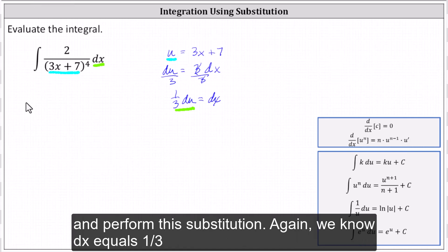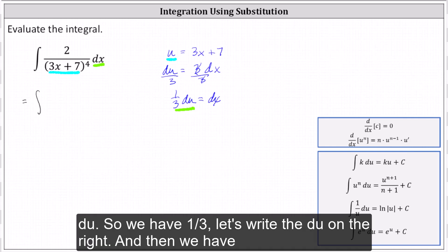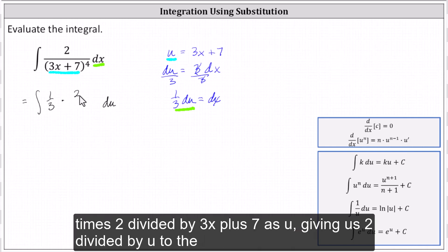Let's go ahead and perform the substitution. Again, we know dx equals 1/3 du, so we'll have 1/3, let's write the du on the right. And then we have times 2 divided by 3x plus 7 is u, giving us 2 divided by u to the fourth.